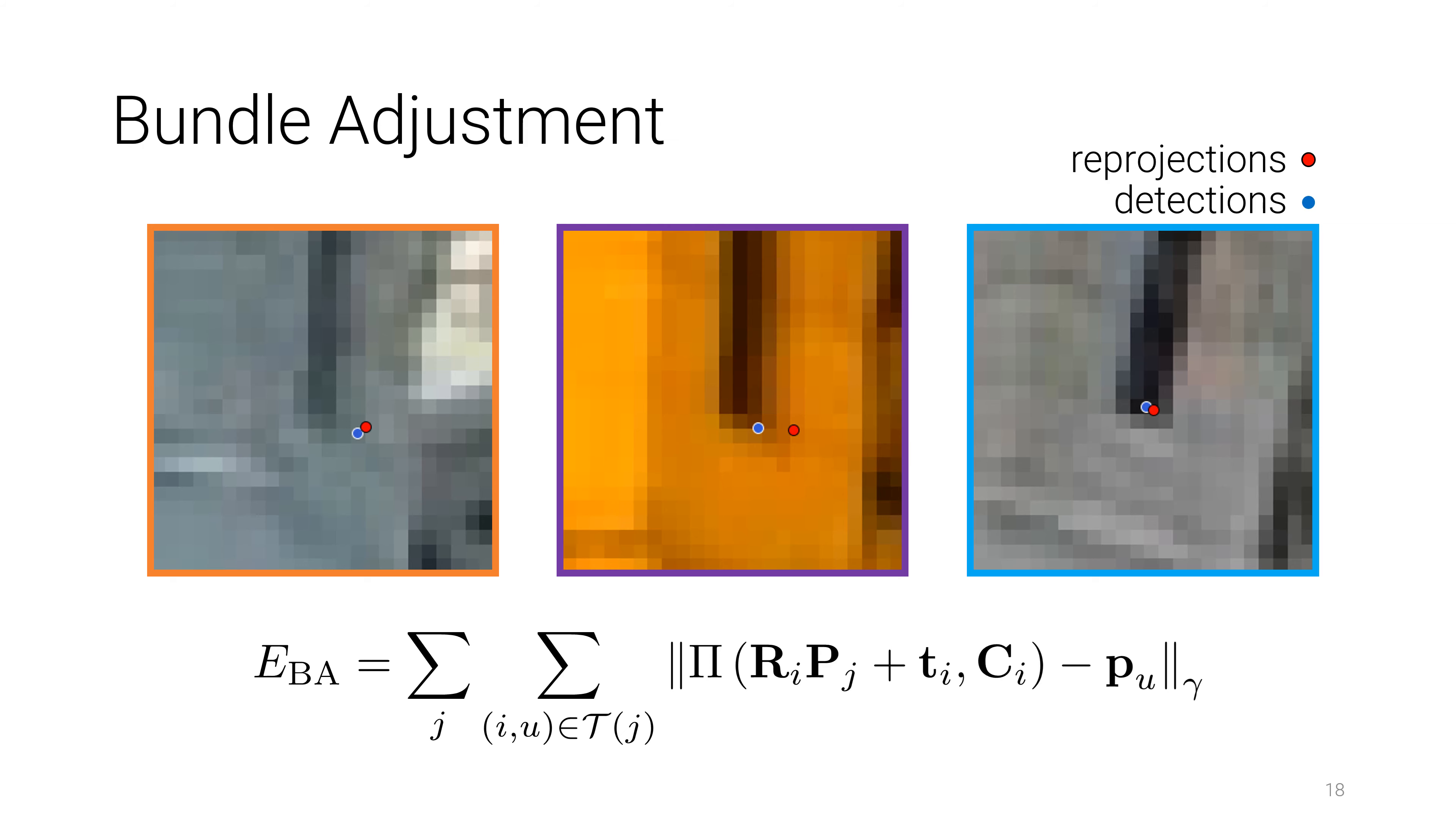Here, the 2D projection of a 3D point in its observing image is compared to the noisy location of its corresponding detection, and their 2D distance is minimized. Noisy initial detections will therefore propagate through the entire SFM pipeline, and result in noisy 3D points and camera poses.